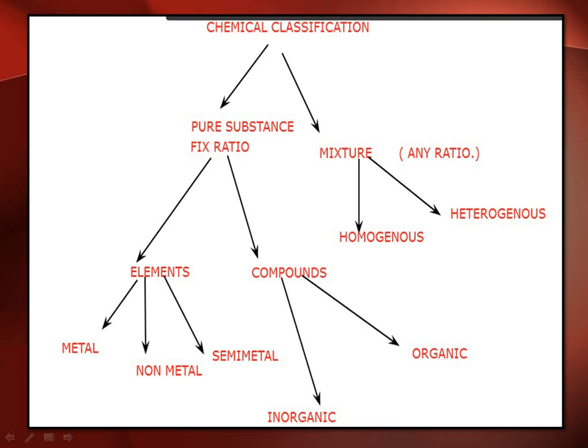We know that pure substances have a fixed ratio. For elements, we discussed metals, non-metals, and semi-metals — atoms and molecules. In this lecture we will discuss compounds and their types: organic compounds and inorganic compounds. Then we will discuss mixtures and their types: homogeneous and heterogeneous.